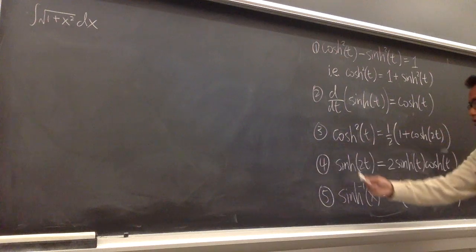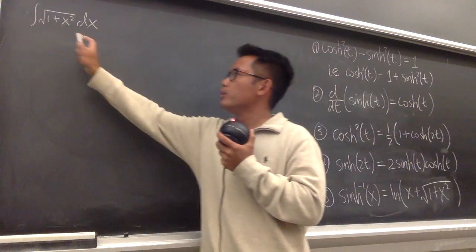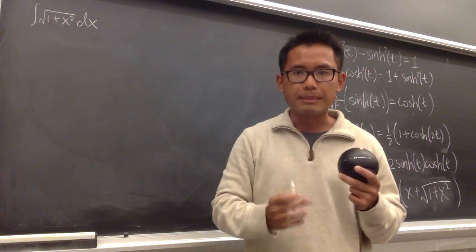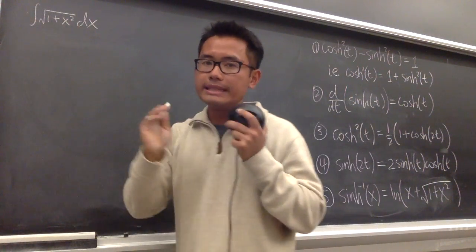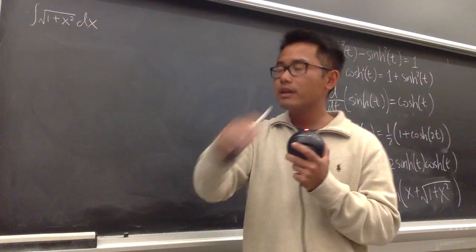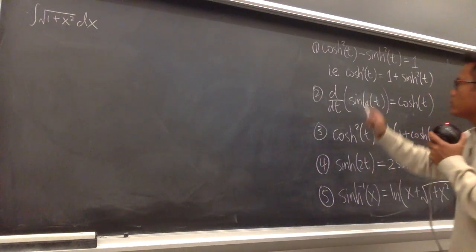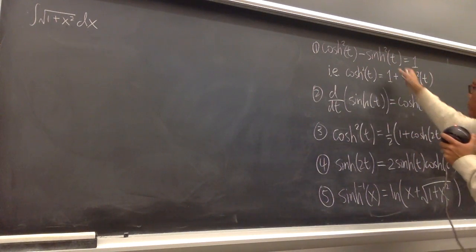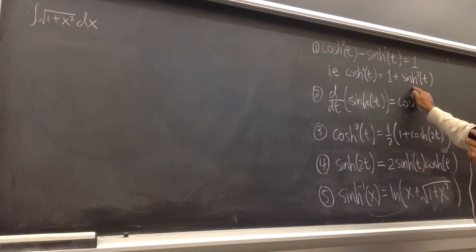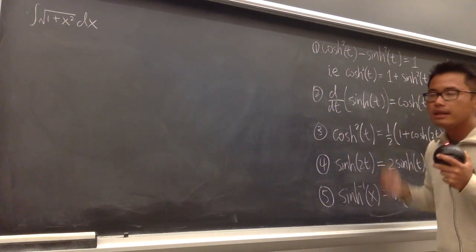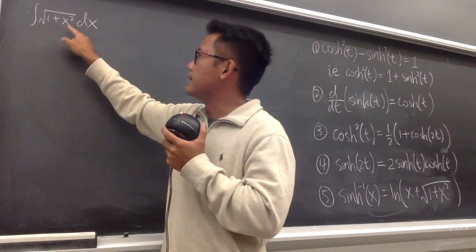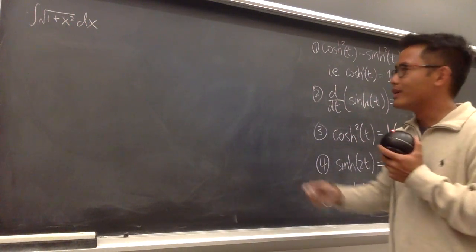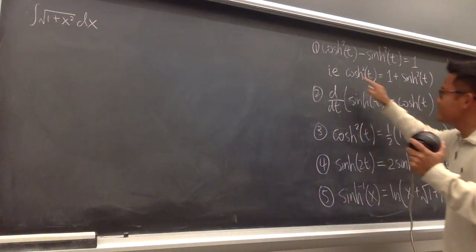I've written down all the information we need already. We have 1 plus x squared inside of the square root. The idea is very similar to trig substitution — we want to complete the square inside so that something squared can cancel with the square root. The first identity we'll use is cosh²(t) minus sinh²(t) equals 1, which means 1 plus sinh²(t) equals cosh²(t).